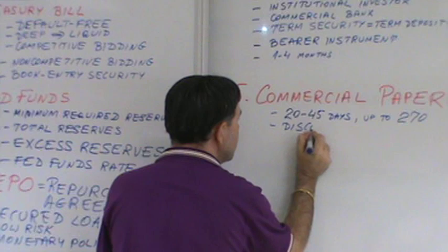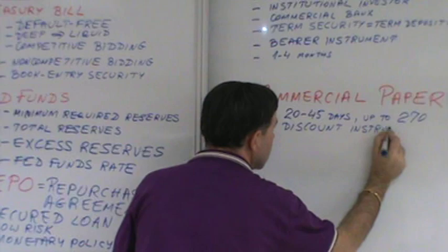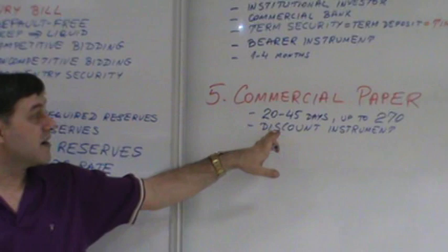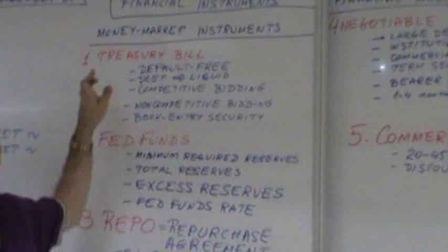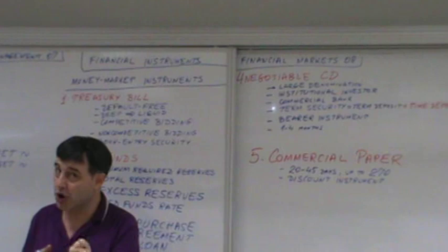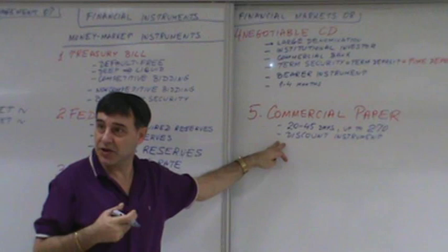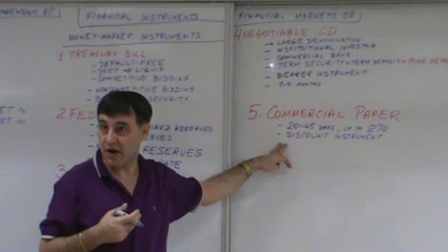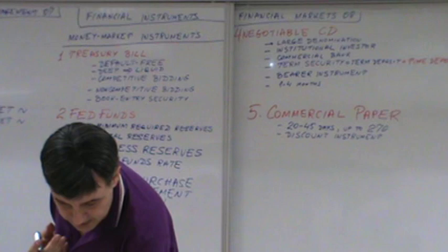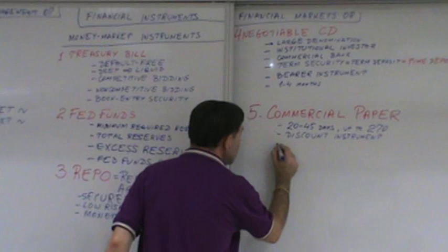Characteristic number two is a discount instrument. A discount instrument is exactly like the treasury bill — it has no coupon, it pays no interest. The only way to get a return is to be sold at a discount from its face value. So it is always sold at a discount and carries no interest, but it still has a return.